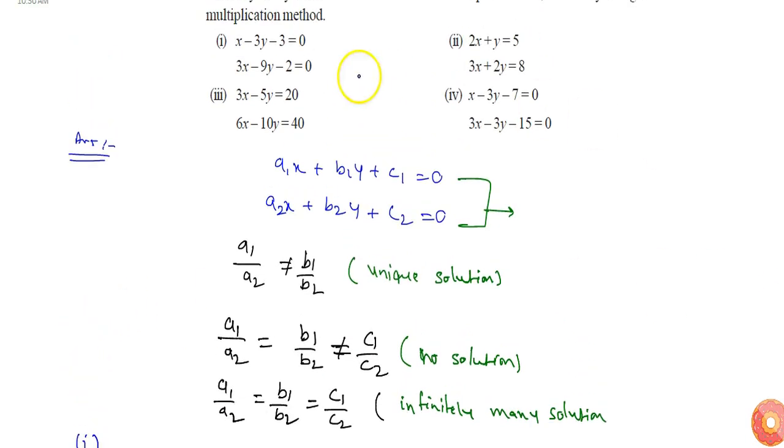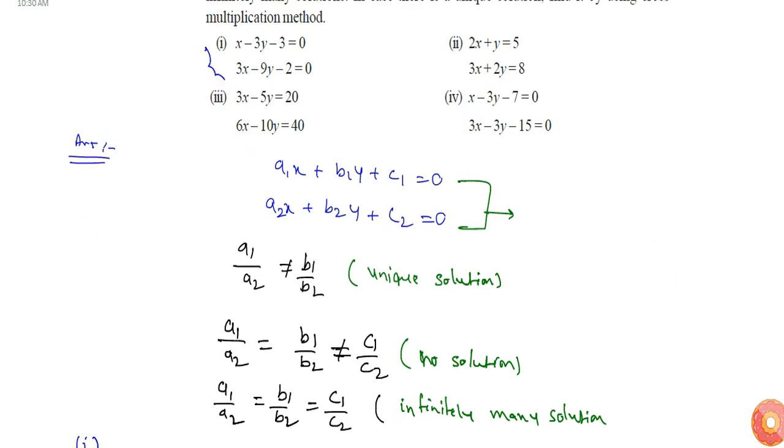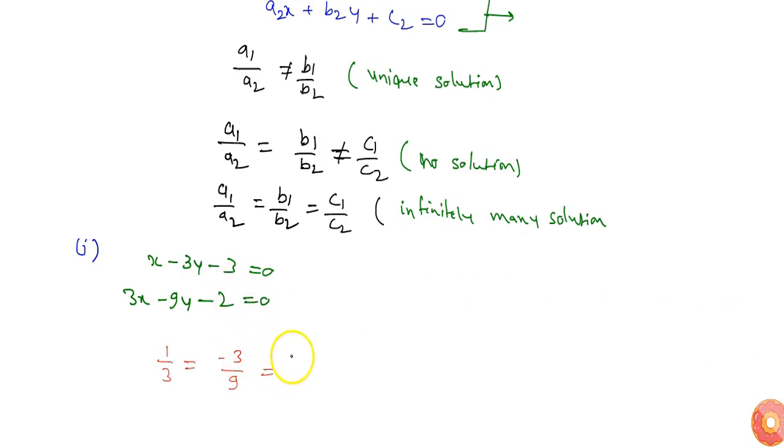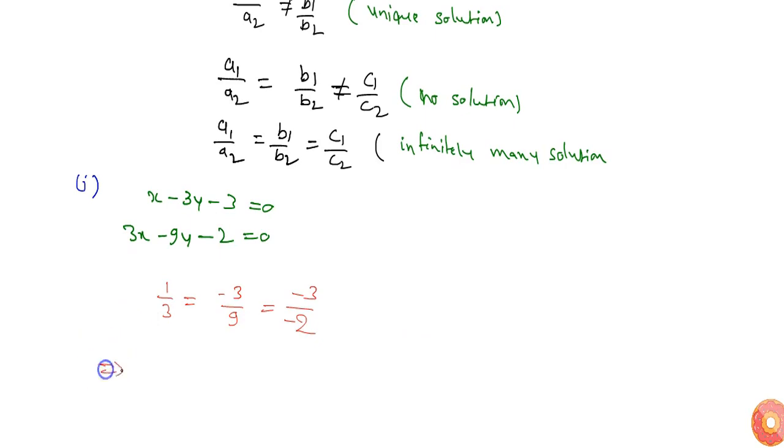Now in part (i), a1/a2 will be 1/3, equals to b1/b2 which will be -3/9, equals to c1/c2 which is -3/-2.